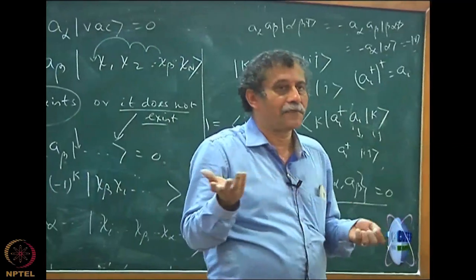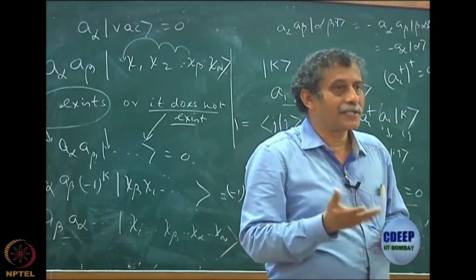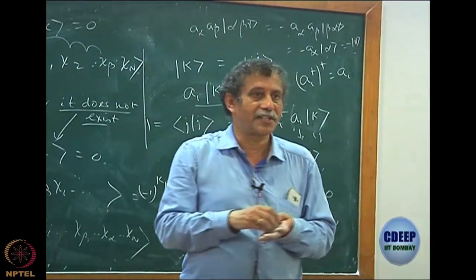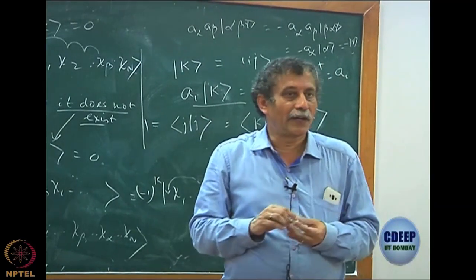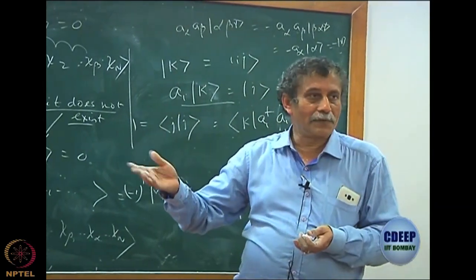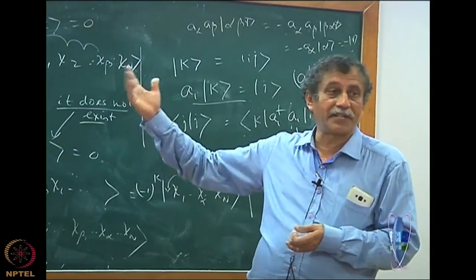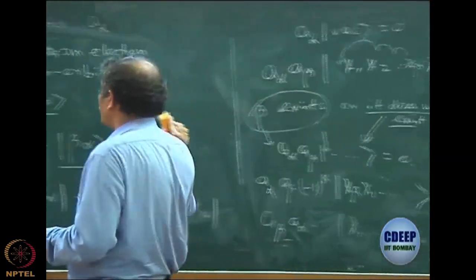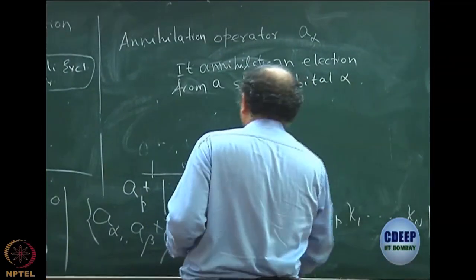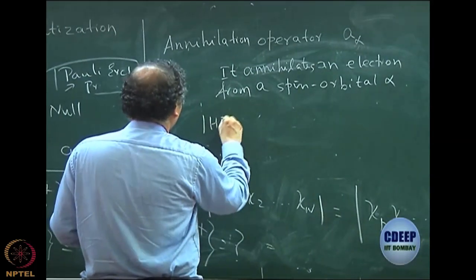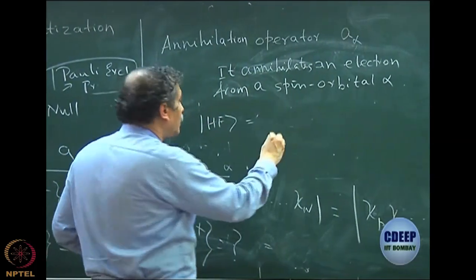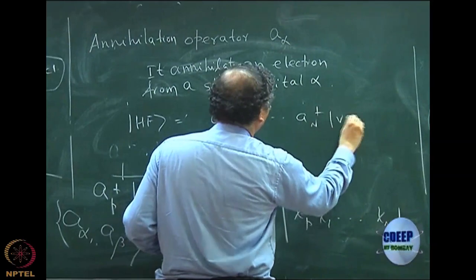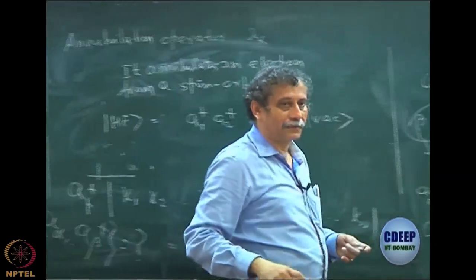Second quantization was developed as a mathematical tool used extensively in physics, particularly in field theory. Quantum chemistry came much later. But you will see that it simplifies many things. For example, the Hartree-Fock wave function — the determinant |χ₁, χ₂, ..., χₙ〉 — is simply written as a†₁ a†₂ ... a†ₙ |vac〉. Over. It is very simple — I know exactly what the columns are in the determinant.